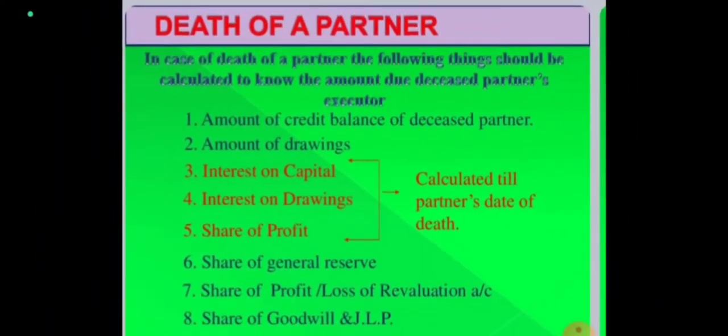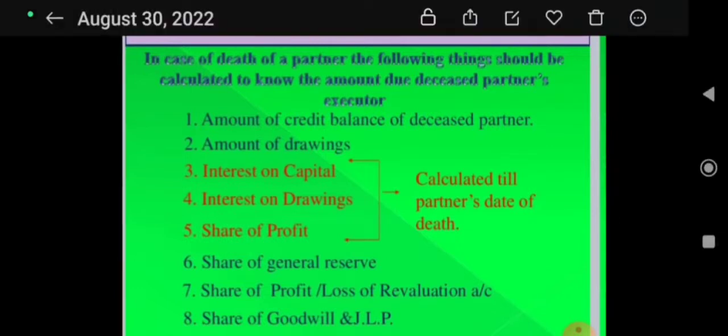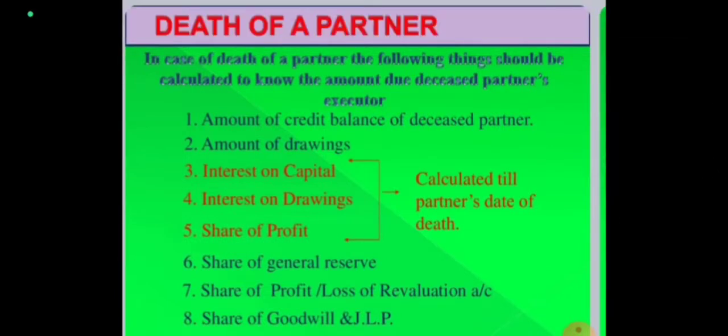The first point is the amount of credit balance of the deceased partner's capital account — whatever balance is shown in the capital account is to be given to the executor. Second, the amount of drawings: if the partner who has died had certain drawings, that is to be taken back and adjusted through his capital account.